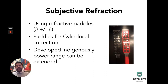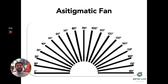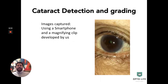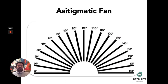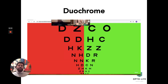Using these paddles we can determine the new prescription. For cylindrical prescriptions, we use the astigmatic fan and also cross-check with the IQ Vision Check to understand the axis. So using the astigmatic fan and the objective refraction together, we can determine what cylindrical prescription the patient may require. The duochrome gives us an indication of over-correction or under-correction — since there is a high chance of over-correction with the focal meter, we use the duochrome to reduce or adjust the prescription accordingly.